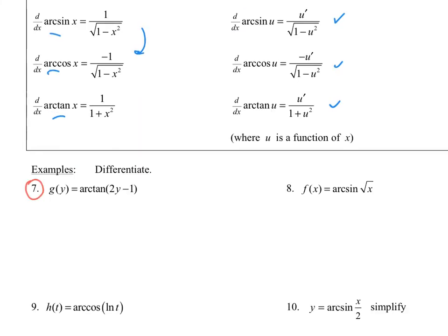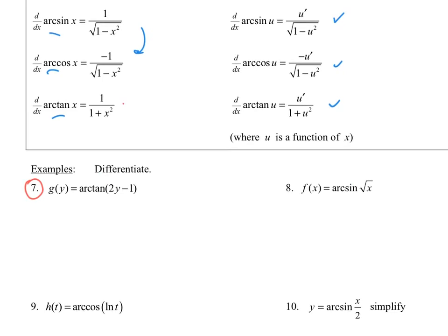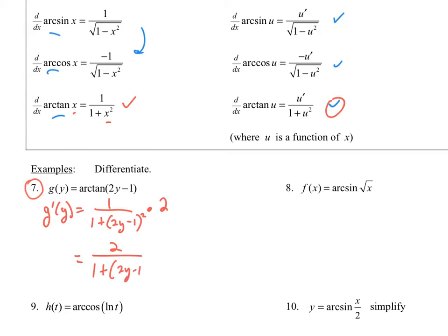Number 7: we're finding the derivative of arc tan of (2y − 1). The object of my tangent is 2y − 1, so using the formula with u, it's 1 over (1 plus u squared), where u is 2y − 1. Don't forget to chain off — the derivative of 2y − 1 is 2. So we get 2 all over 1 plus (2y − 1) quantity squared.